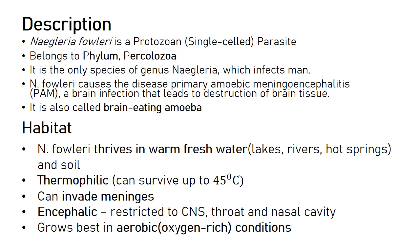Naegleria fowleri is mainly found in warm fresh waters such as lakes, rivers, hot springs, and also in soil. It is thermophilic, able to survive in hot temperatures up to 45 degrees Celsius. It invades the human body via the nasal cavity, reaches the meninges and the central nervous system, and it is aerobic, meaning it thrives in oxygen-rich conditions.